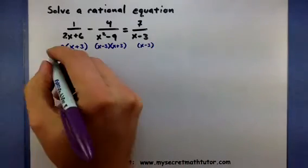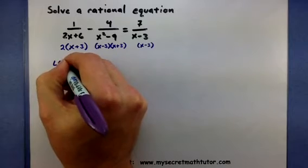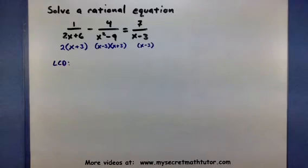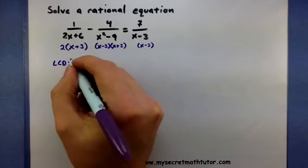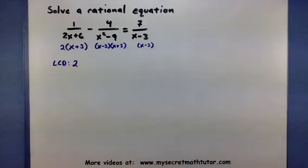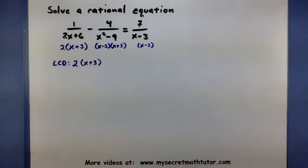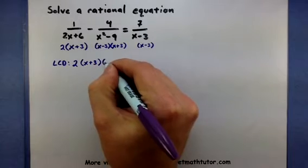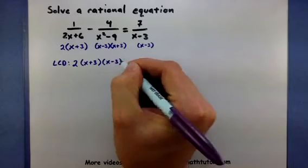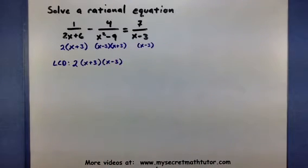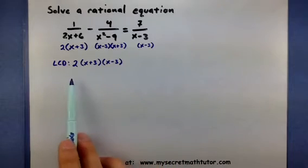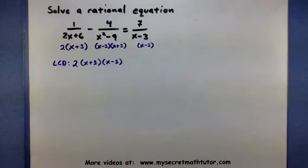Now what that tells me is that my lowest common denominator needs to have enough pieces that I could build any one of these denominators. So let's see. I need a 2 because there's a 2 in this one. I need an x plus 3. Looks like I also need an x minus 3. And looks like that's it. So this contains all the pieces of each of the denominators.